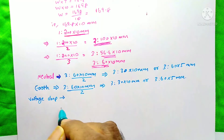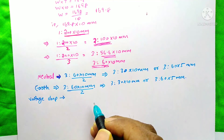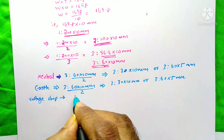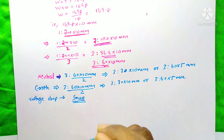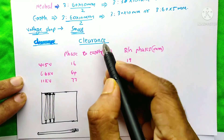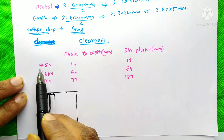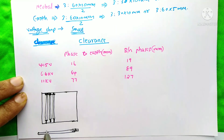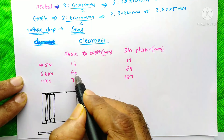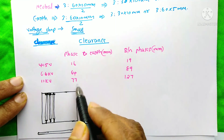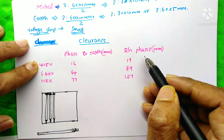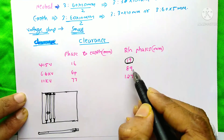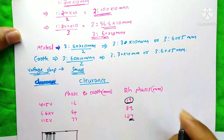For cable runs there is a chance of voltage drop due to length, but bus bars are compact inside the LV room so voltage drop is not a concern. Regarding bus bar clearances: at 415 V, phase-to-earth clearance = 16 mm; at 6.6 kV = 64 mm; at 1 kV = 77 mm. Between phases: at 415 V = 19 mm; at 6.6 kV = 89 mm; at 1 kV = 127 mm.